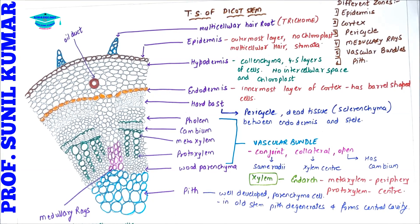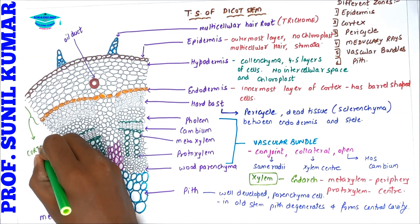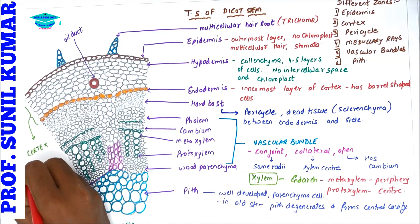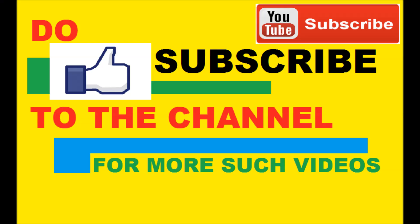Remember these zones and the vascular bundle which is conjoint, collateral, and open. The cortex is made up of parenchyma cells. Hope you have understood the dicot stem — do give a like if you understood the concept, and if you are new to the channel, don't forget to subscribe. Thank you very much.